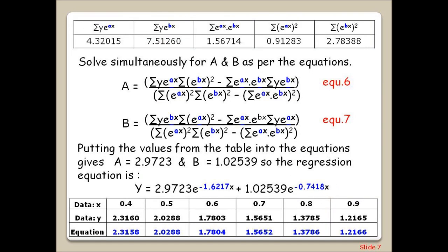We can then solve simultaneously for capital A and capital B as per equations 6 and 7. Putting the values from the table into the equations gives capital A equals 2.9723 and capital B equals 1.02539, so the regression equation is as shown. The outputs from the equation for inputs of data x are given in blue, and we can see that they are almost in perfect correlation with the y value in the data.